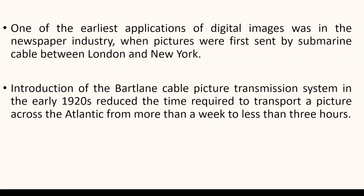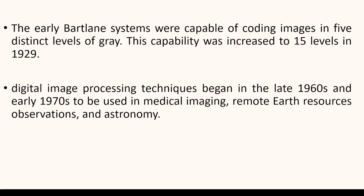One of the earliest applications of digital images was in the newspaper industry. It was necessary that pictures be sent from one place to another, and they used submarine cables to send pictures across London and York. Bartlein cable picture transmission was introduced in 1920, which reduced the time required to transport images across the Atlantic from around a week to around 3 hours. The early Bartlein systems were capable of coding images in 5 distinct levels of gray, and this capability was later increased to 15 levels by 1929.